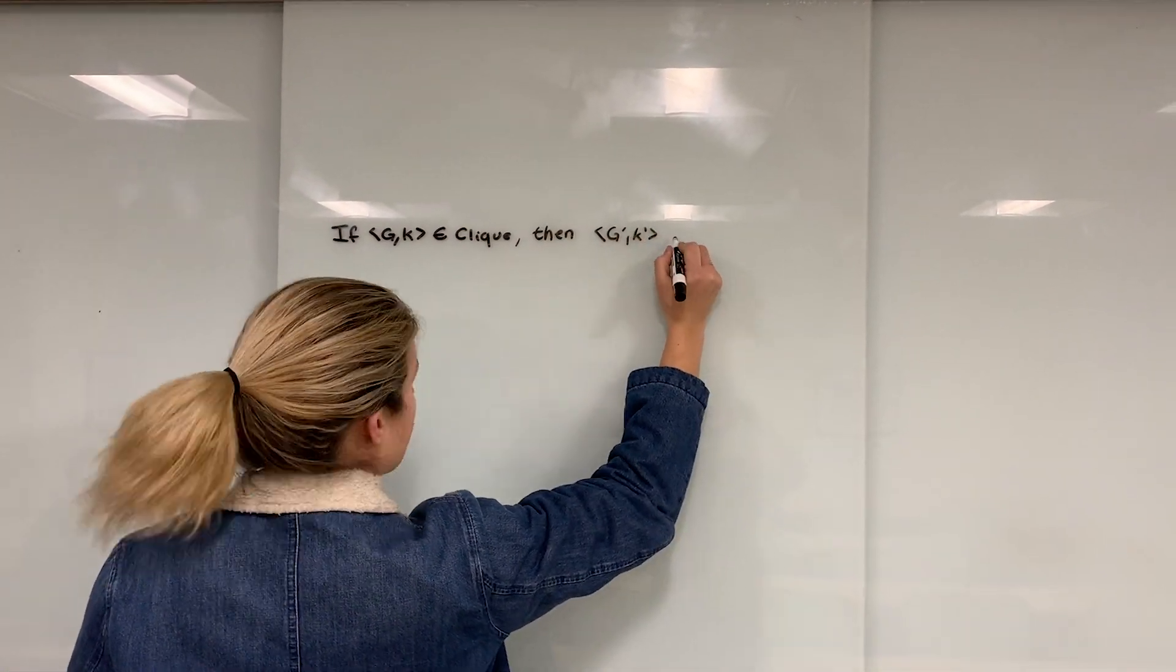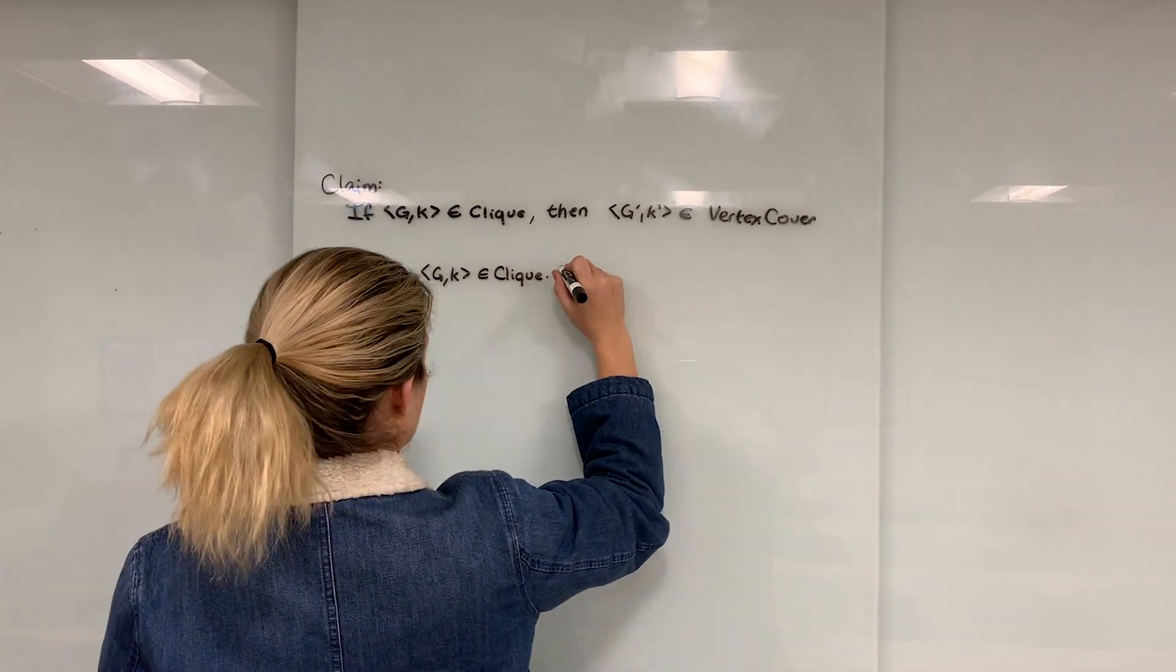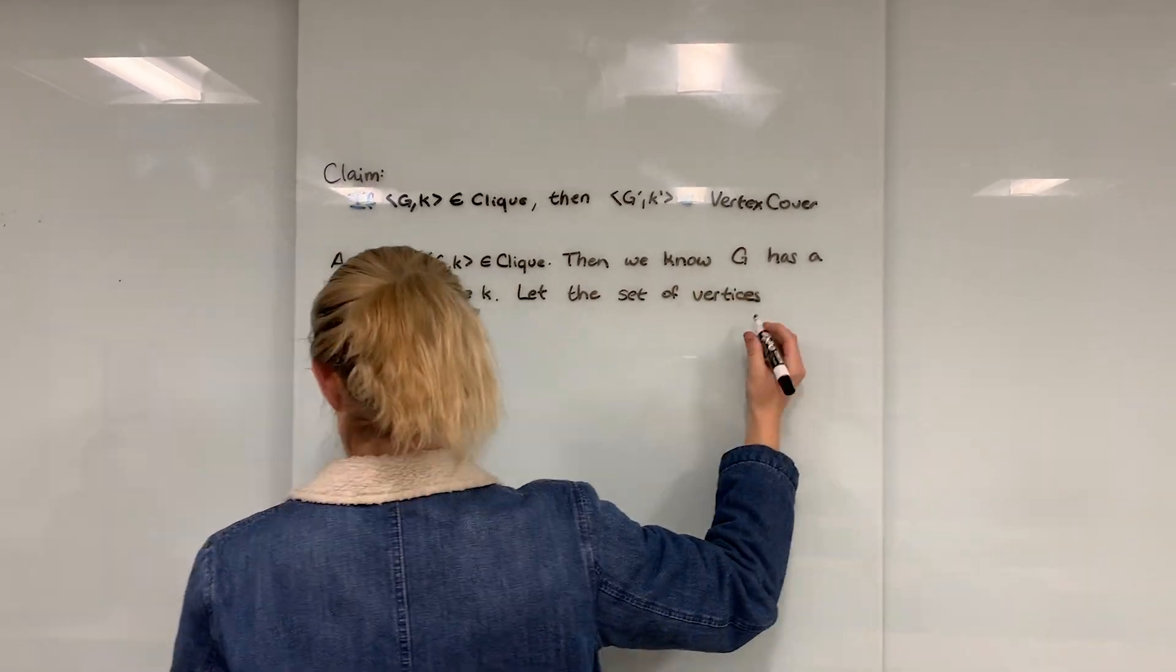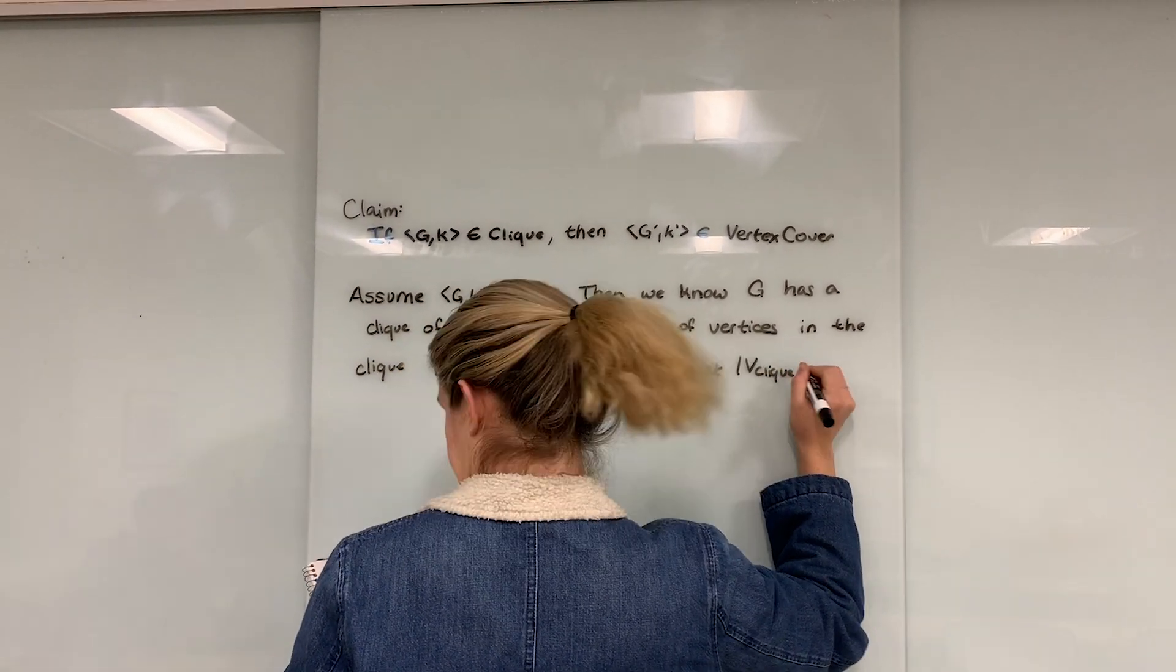We claim that if G, K is in clique, then G', K' is in vertex cover. Assume G, K is in clique. Then we know G has a clique of size K. So let that set of vertices in the clique be V' clique. The size of V' clique is K.